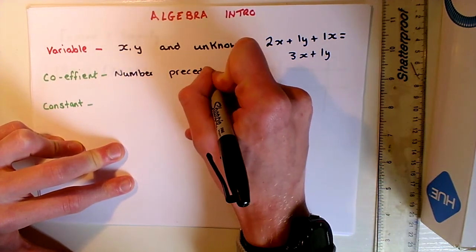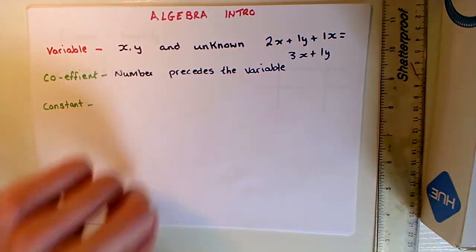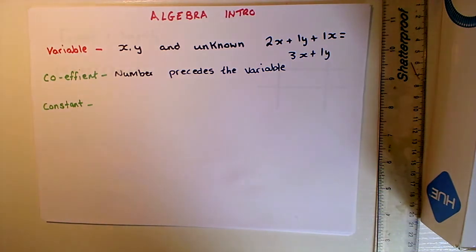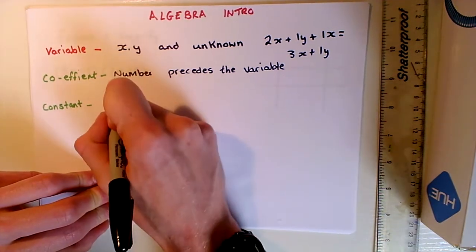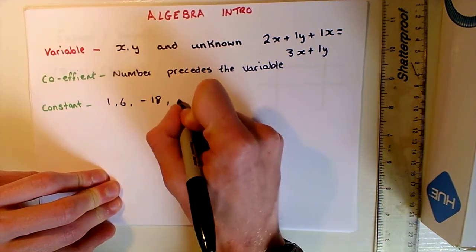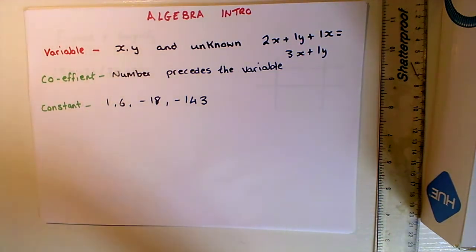Finally, we have our constant. What is a constant? A constant is a quantity that does not change in value. If something doesn't change, it's always the same, it's constantly the same thing. So it's the numbers that we should be extremely familiar with. Examples: 1 is a constant, 6 is a constant, minus 18 is a constant, minus 143 is a constant. All these numbers are constant because we know what they are. We know their value. It's not going to change depending on the question. 1 is always 1, 6 is always 6, and so on.